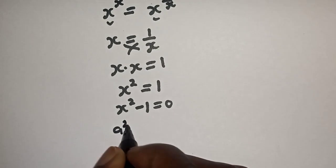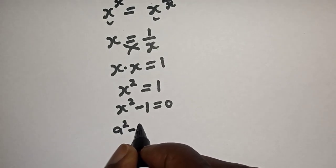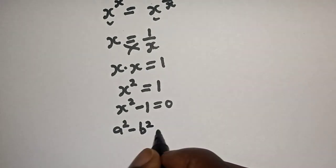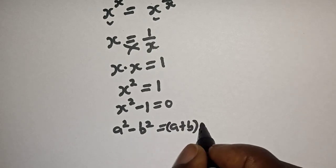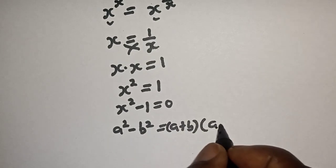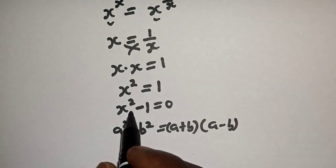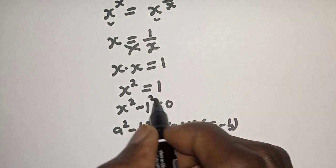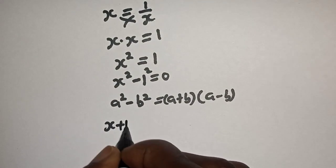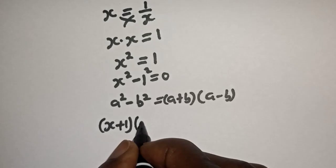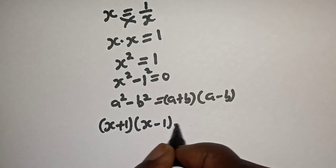If you have a square minus b square, this is equal to a plus b multiplied by a minus b. And of course this is one square, so we have s plus one multiplied by s minus one is equal to zero.